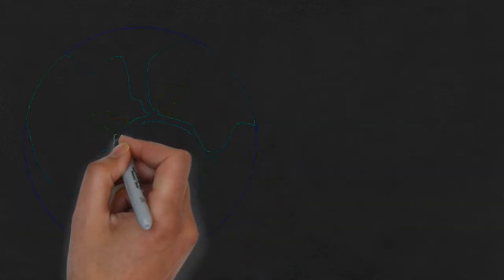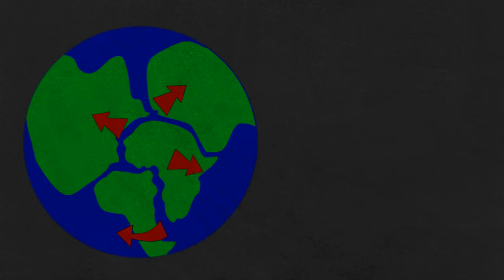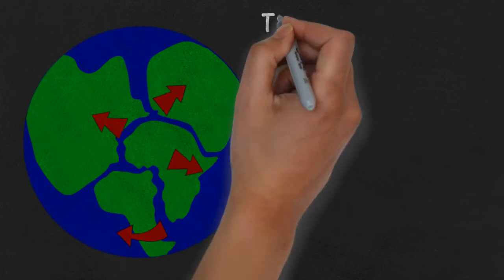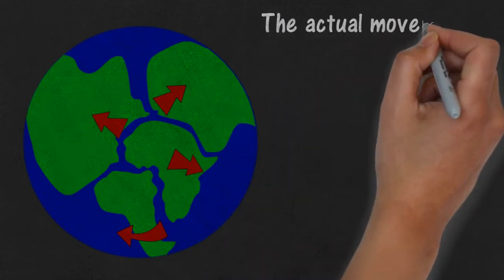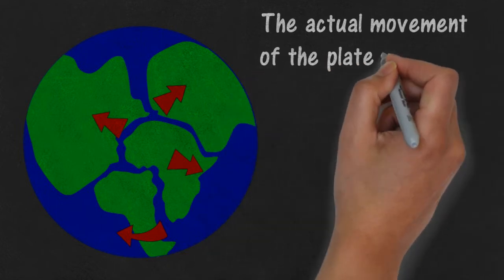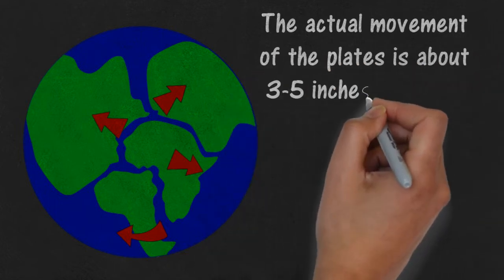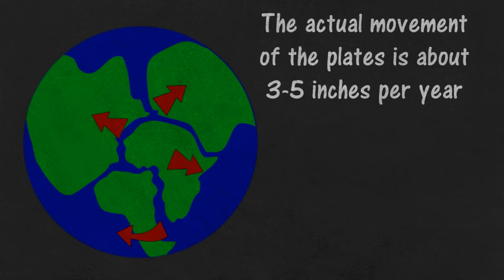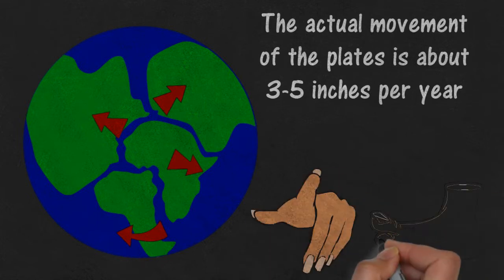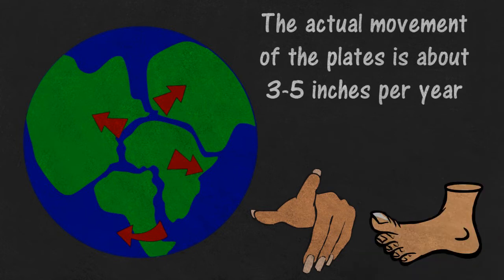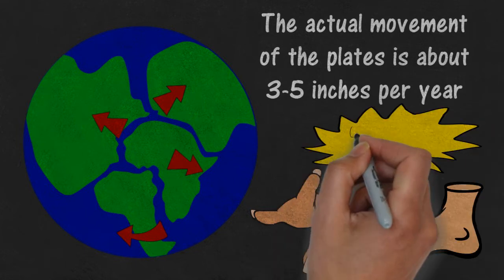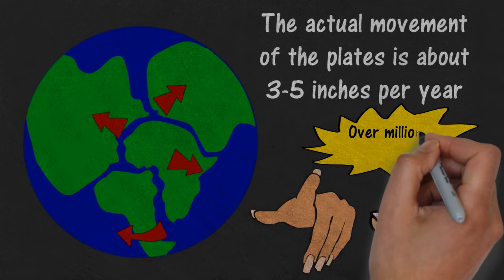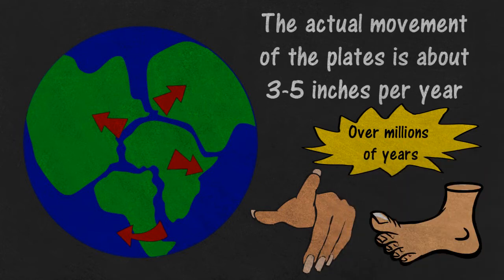The actual movement of the plates is much too slow to notice, moving at about three to five inches per year, which makes sense considering how thick the plates are. Three to five inches per year is about the rate at which your nails grow, which you also probably never noticed or paid much attention to. All major and really noticeable movement of the Earth's plates happens over millions and millions of years.